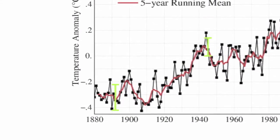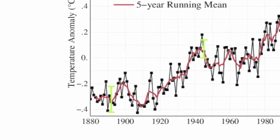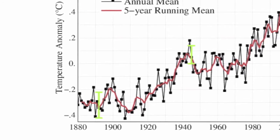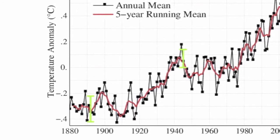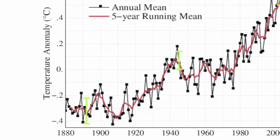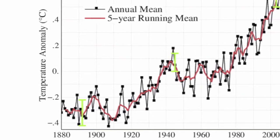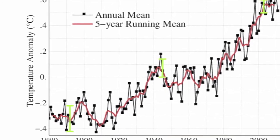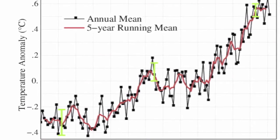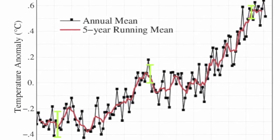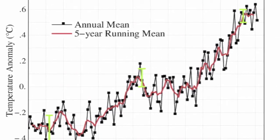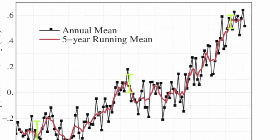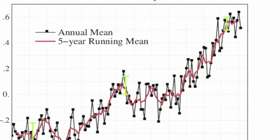And he's right with that. If you pick your own start and/or end points, you can most of the time show any trend you want — especially if you take very short time spans like Monckton did with his examples. The climate is very variable in the short term and that makes it hard to pick up any underlying trends. This is why climate trends are calculated over relatively long periods, for example 20 years.